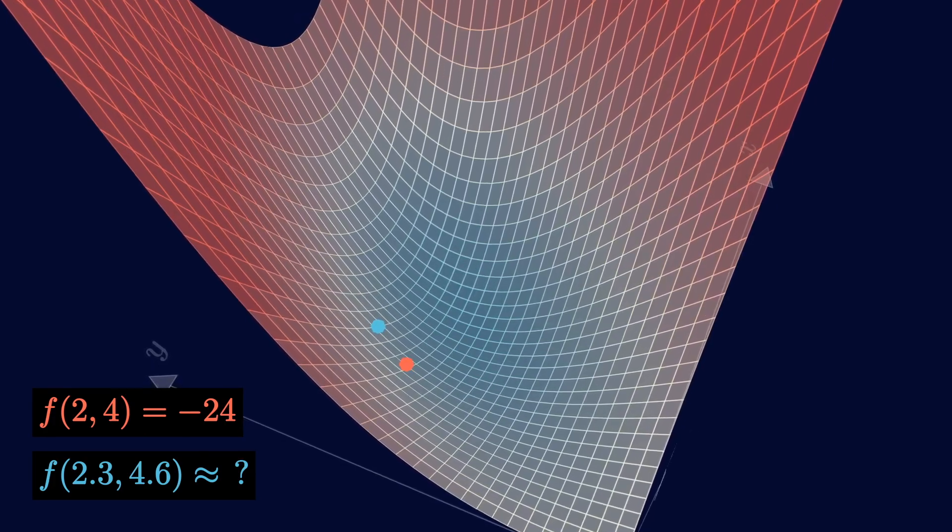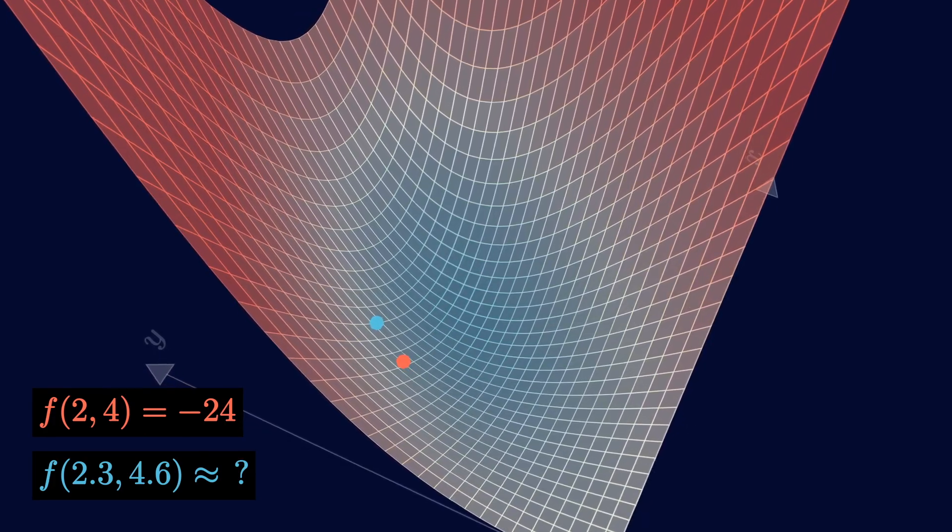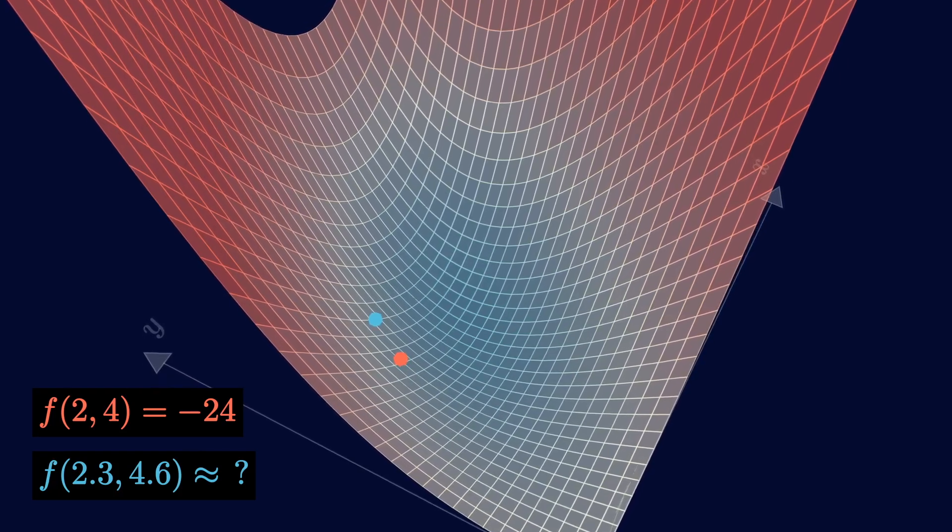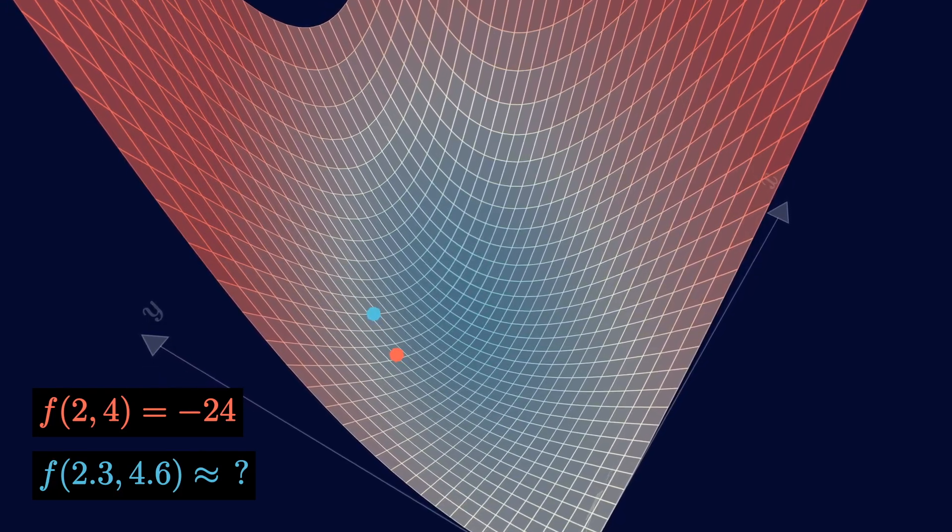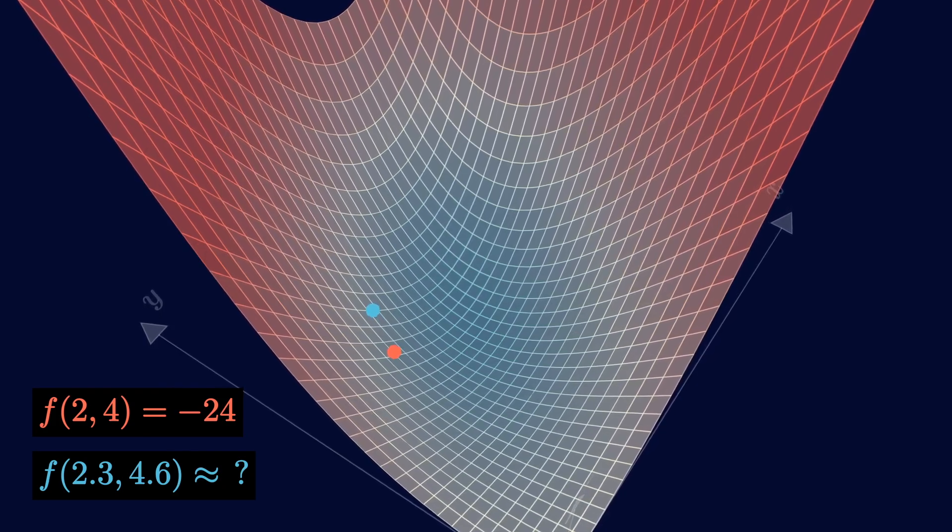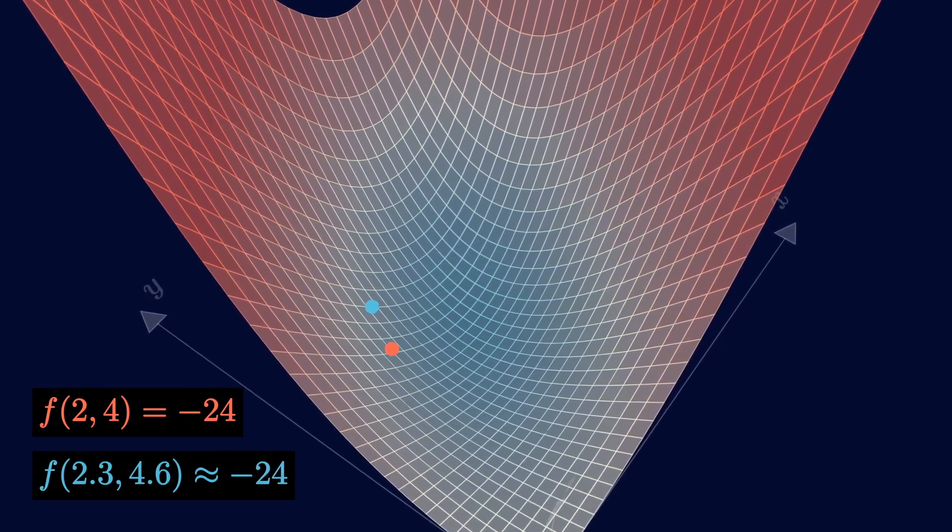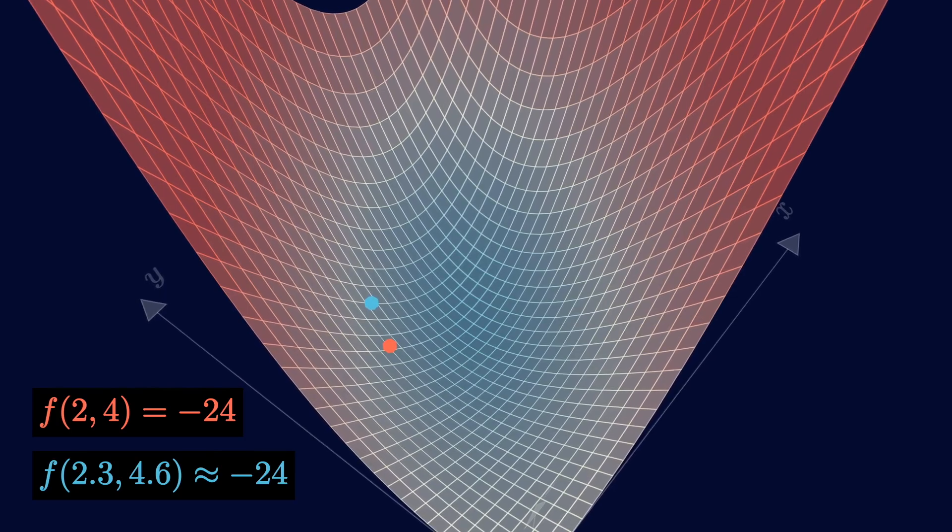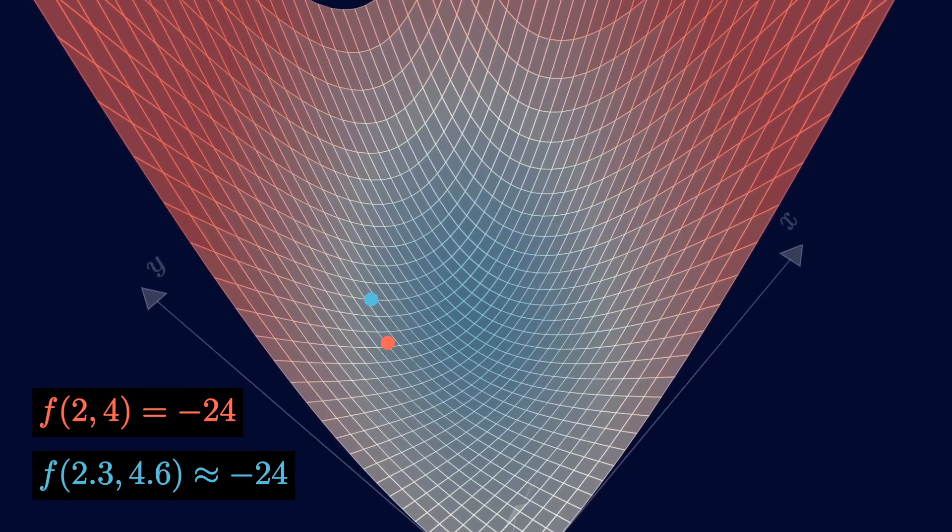Now, after giving it some thought, you really don't have much information to go off of. Since the two points are kind of close, you might guess that the blue point is also around minus 24, which is a pretty reasonable guess given the lack of information.